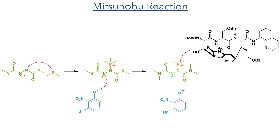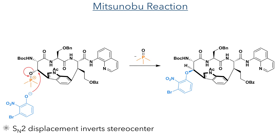In the next step a Mitsunobu reaction was carried out. This used tetramethylazodicarboxamide as the coupling reagent, which was activated by trimethylphosphine. The resulting anionic species deprotonates the nitrophenol while the secondary alcohol attacks the cationic phosphorus. This activates the oxygen as an electrophile and the phenolate displaces it in an SN2 manner, inverting the stereochemistry.